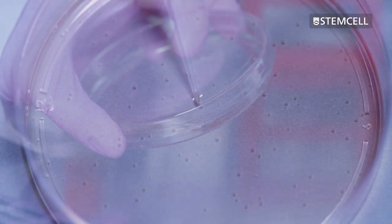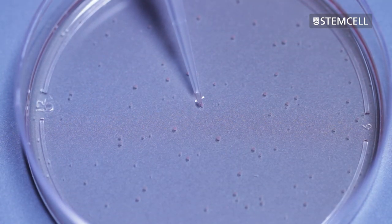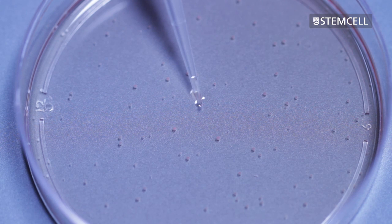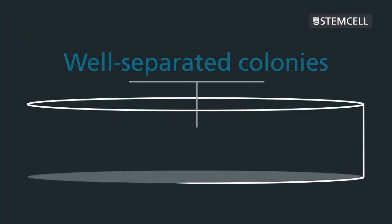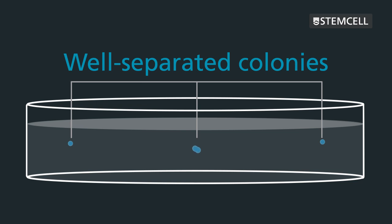This allows the individual cells to grow into discrete monoclonal colonies that can be seen with the naked eye. Plating the cells at a density that results in well-separated colonies helps to ensure that each colony grew from a single original cell.